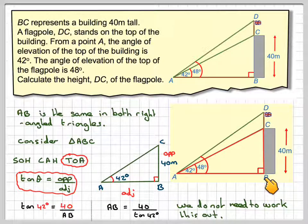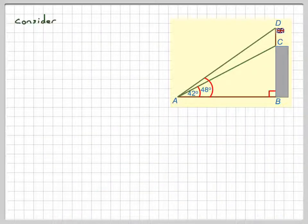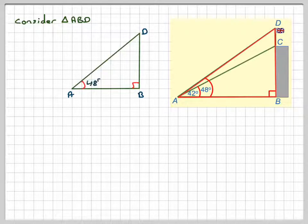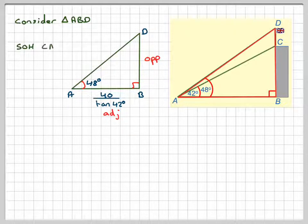What we're going to do is take this triangle. We know AB now, and we know the angle's 48, and therefore we can find the height BD. Consider triangle ABD, that's the one highlighted there. The angle we're going to consider now is 48. If we draw it out, this is 40 over tan 42. This is the adjacent side to the angle. This is the opposite side. Using SOH CAH TOA.